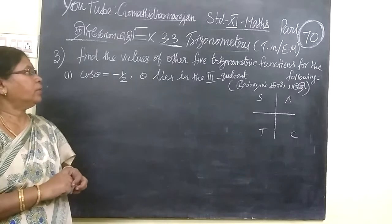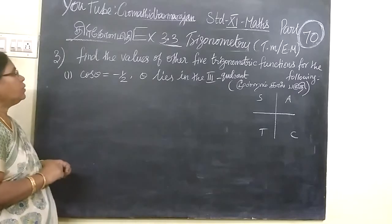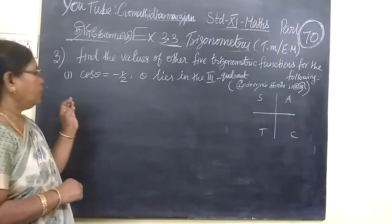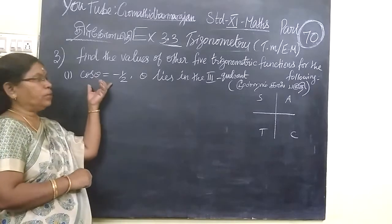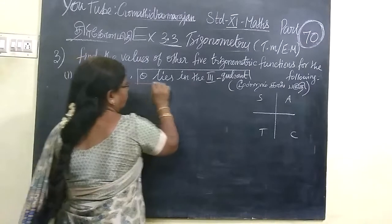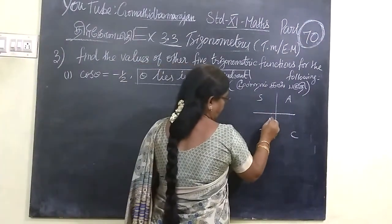We are seeing the third standard trigonometry. It is the third question: find the values of the five trigonometric functions for the following. It is given theta lies in the third quadrant. Theta is in the third quadrant.